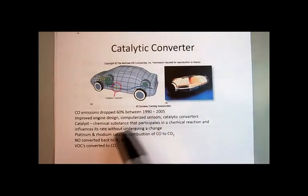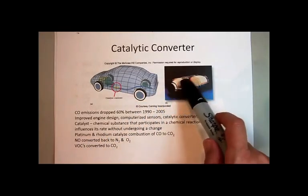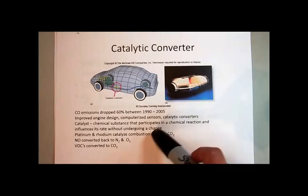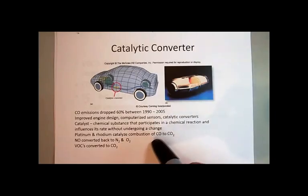but what the chemicals are, are platinum and rhodium, they're metals, and it's like a surface of platinum and rhodium, and on that surface, it catalyzes the combustion of carbon monoxide on up to carbon dioxide. So carbon monoxide is what we call an incomplete combustion product.